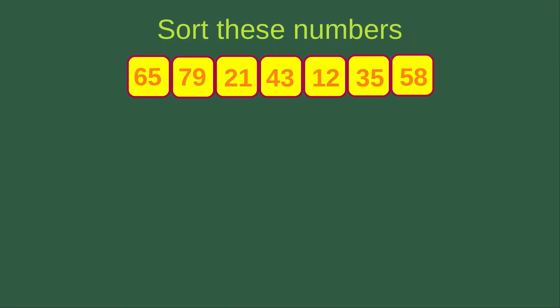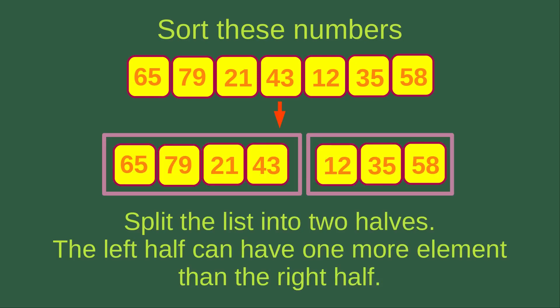So let us see an example of the merge sort process. Suppose I want to sort these numbers. The first step is the splitting process. I would like to split the list into two halves.